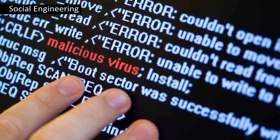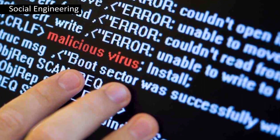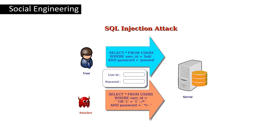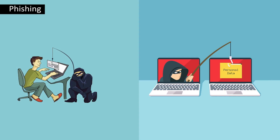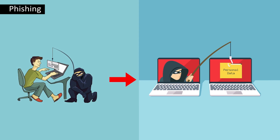Next is social engineering. Malicious code infects social engineering websites through SQL injection, that is structured query language injection, leading any users accessing the website to become infected and may also alter the content of these websites. Next is phishing, which is the action of pretending to be a licensed venture and sending fake emails to fool users into giving up private information that may be used for identity theft at a later point of time.